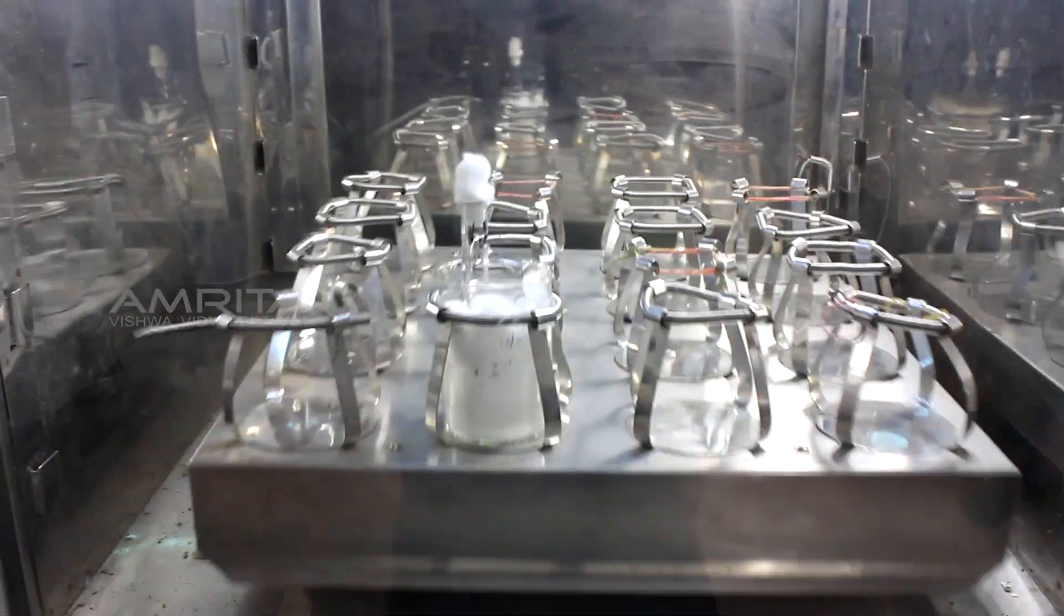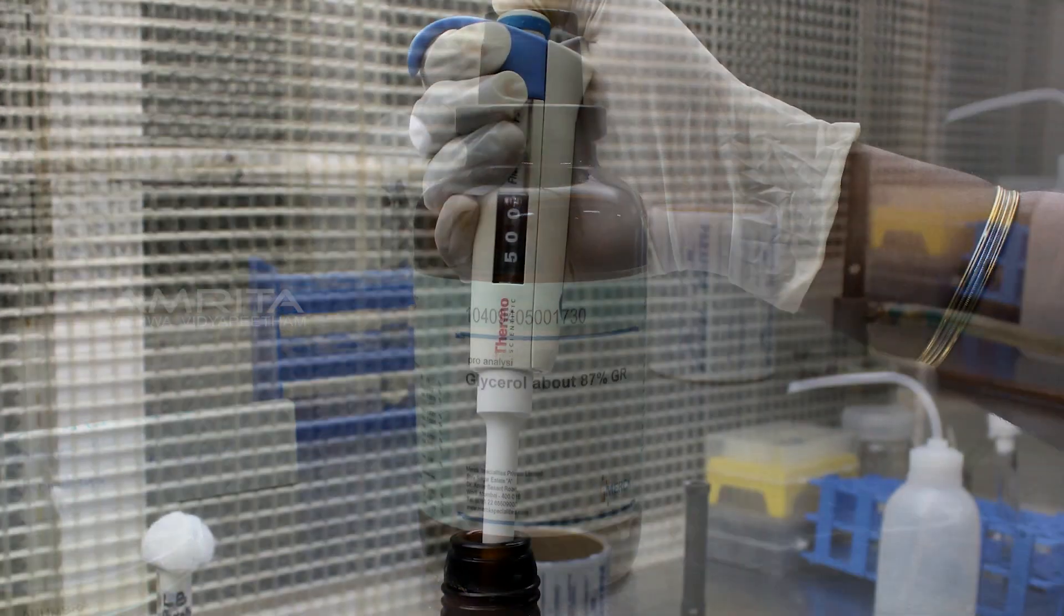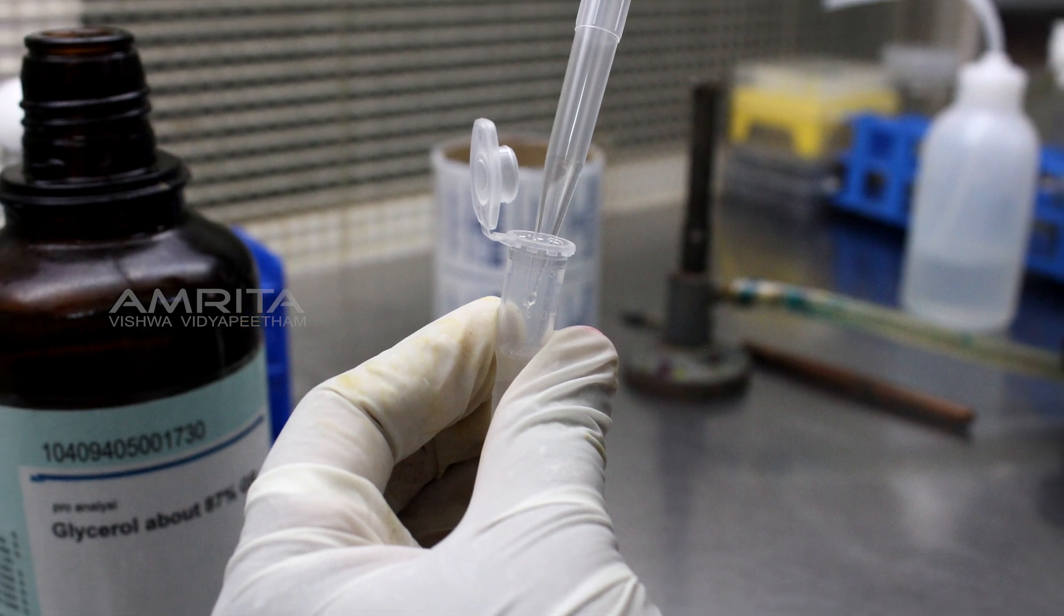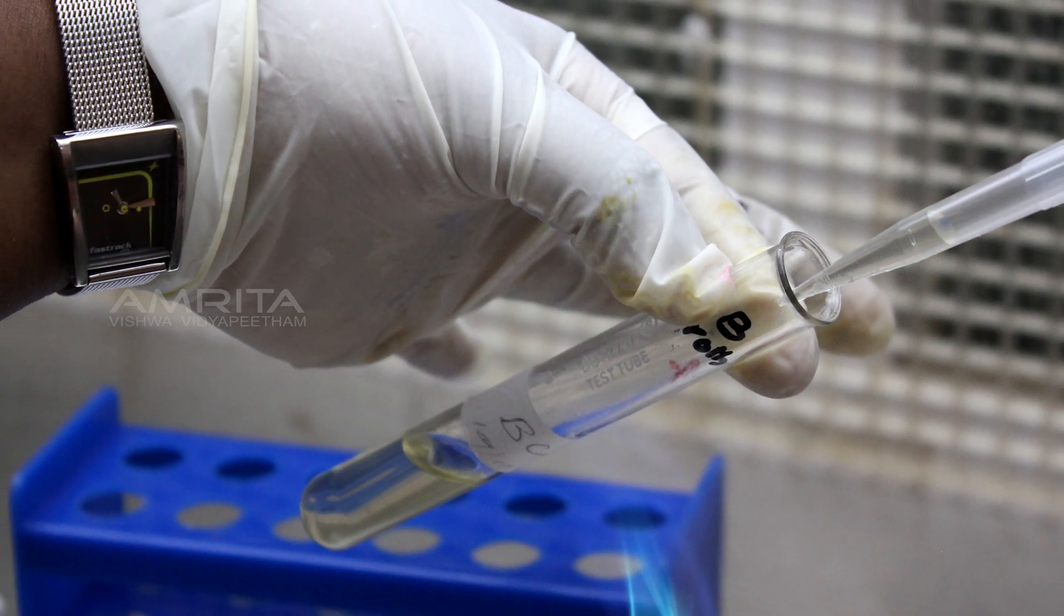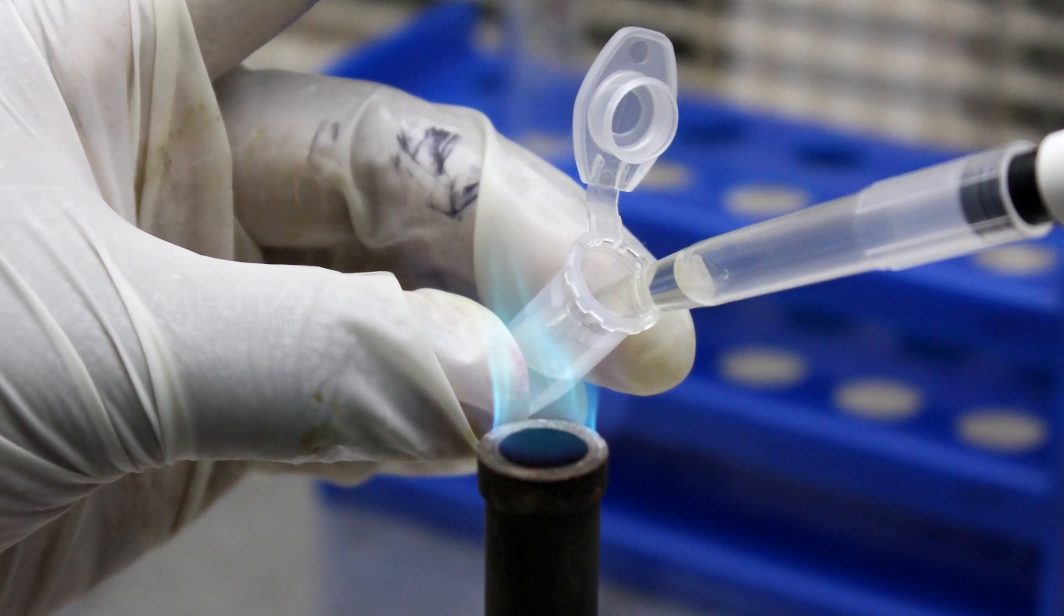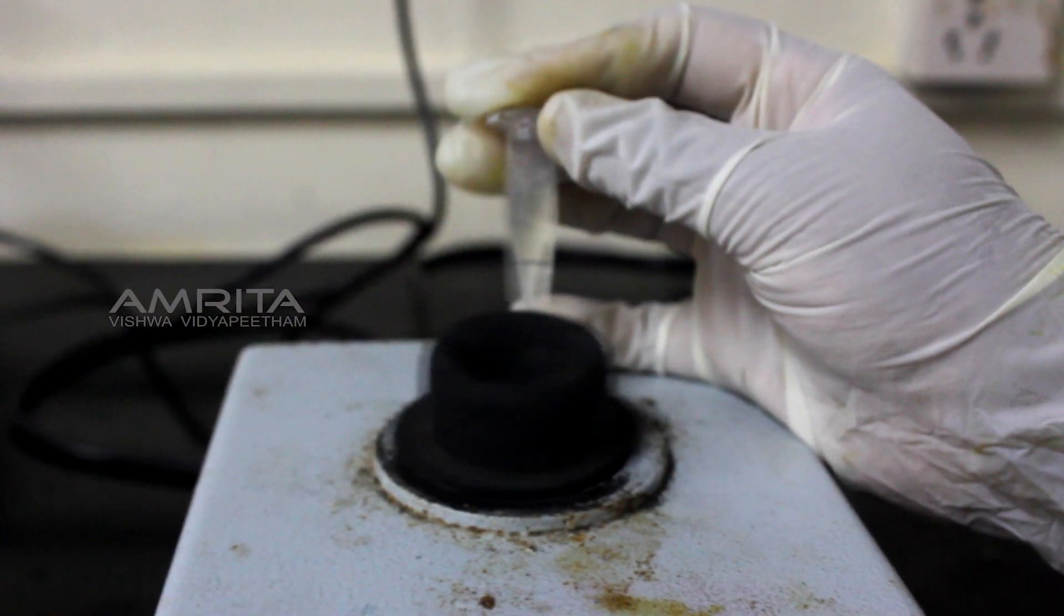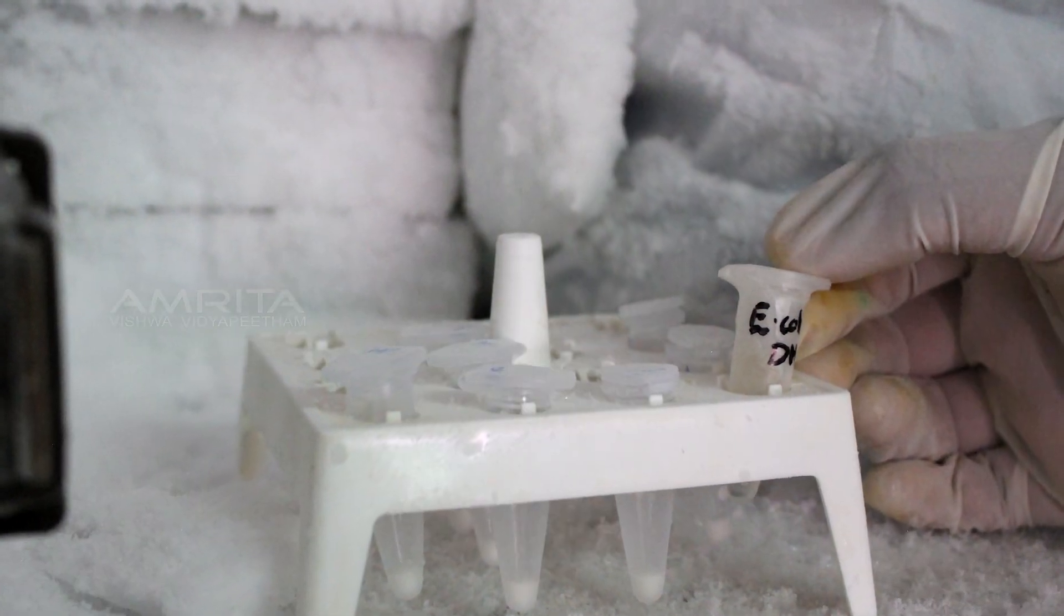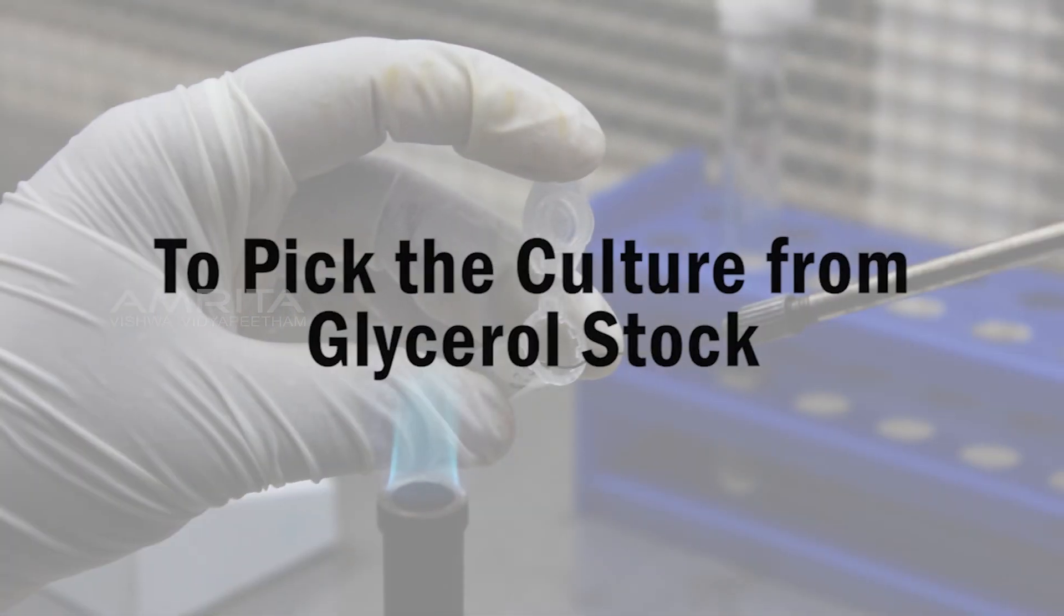Transfer 0.5 ml of sterile 80% glycerol into a fresh microfuge tube. After incubation, remove the broth culture. Add 0.5 ml of the overnight culture to 0.5 ml of 80% sterile glycerol in the microfuge tube. Vortex the mixture slowly. Store the glycerol stock at minus 80 degrees Celsius.